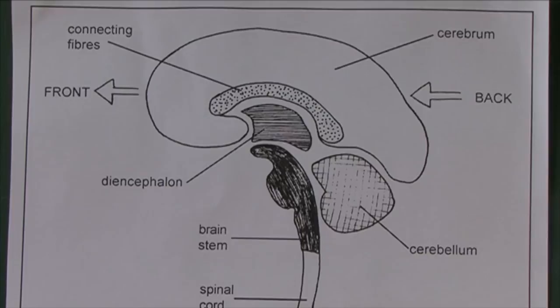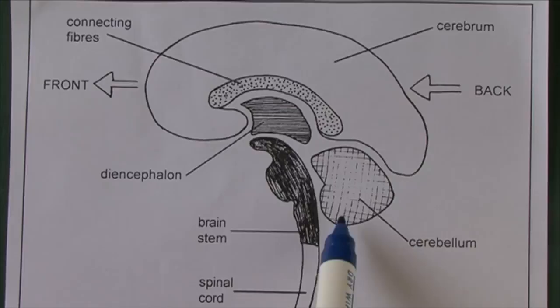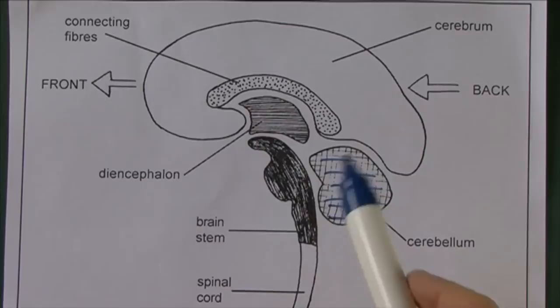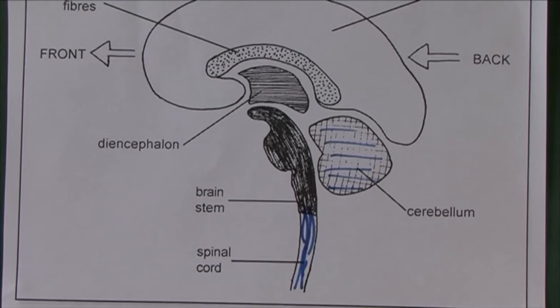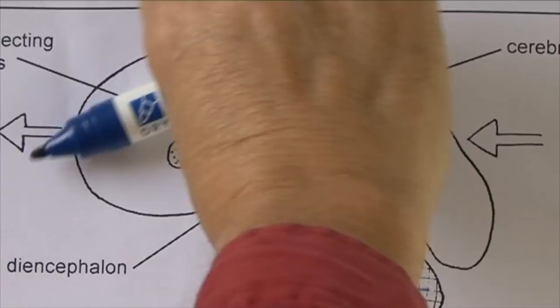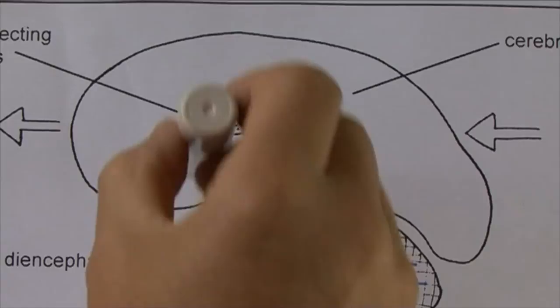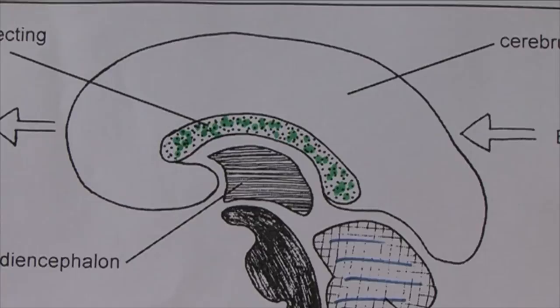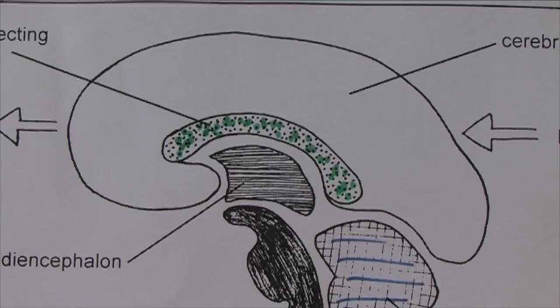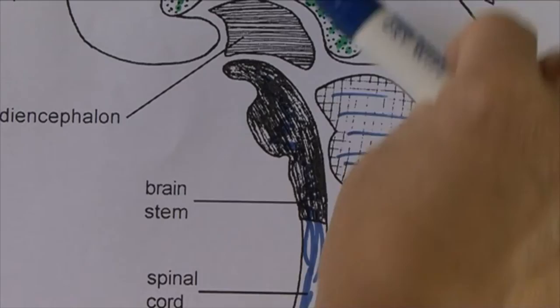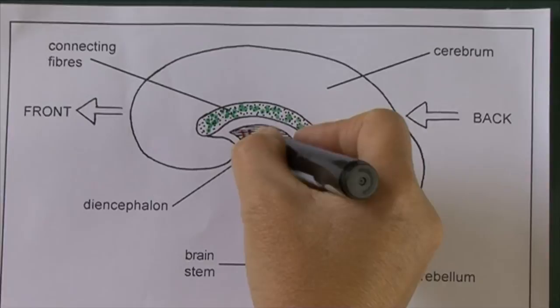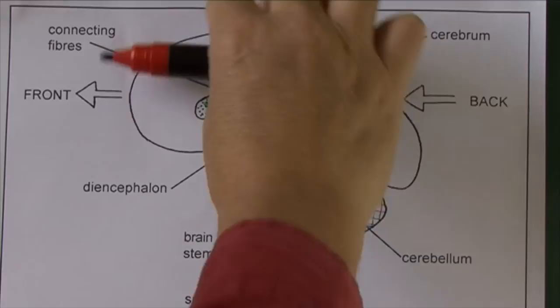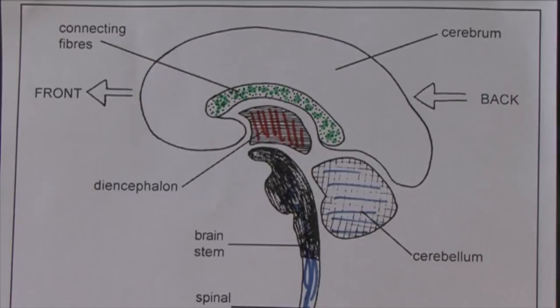Here we see the brain in section down the middle, showing the cerebellum, the brain stem continuous with the spinal cord, and the cerebrum on top. It's essential that one cerebral hemisphere can communicate with the other, and this is achieved by a large bundle of connecting nerve fibres called the corpus callosum, joining the two hemispheres. Between the brain stem and the cerebrum is another area called the diencephalon. So the components are: cerebrum, diencephalon, corpus callosum, brain stem, spinal cord, and cerebellum.